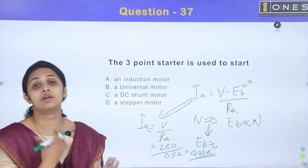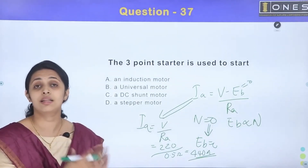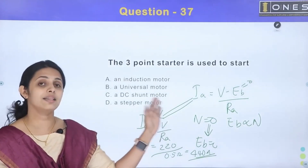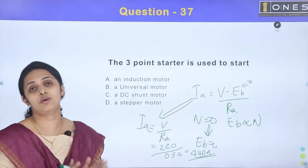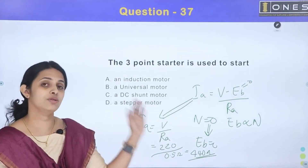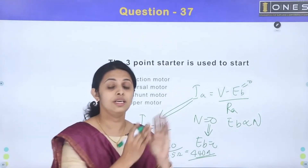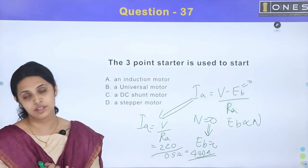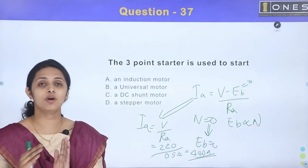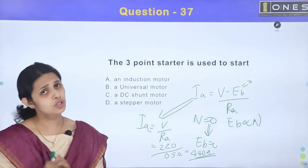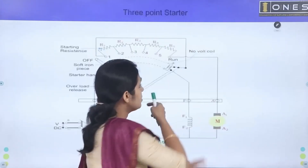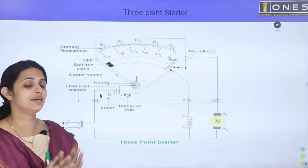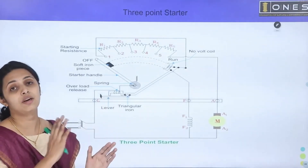This high starting torque and current can damage the rotor conductors. To limit the starting current, we connect a high external resistance in series with the armature circuit.